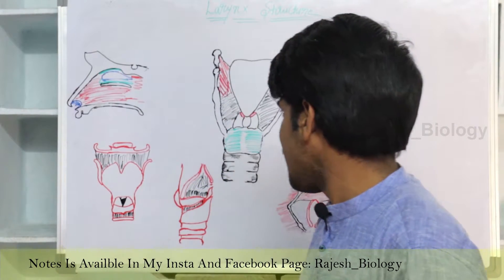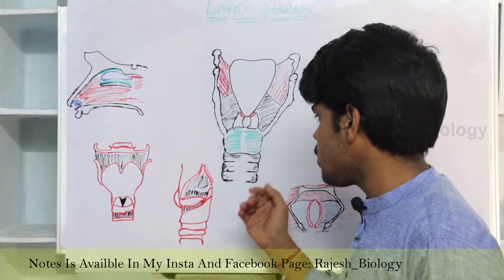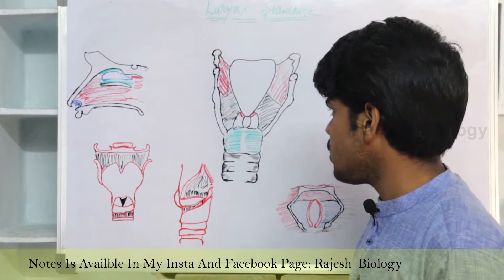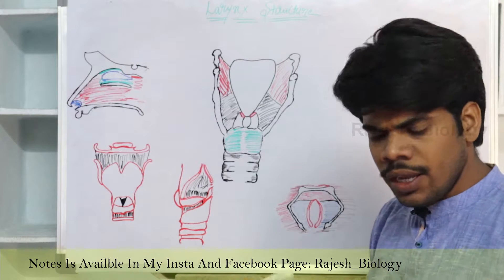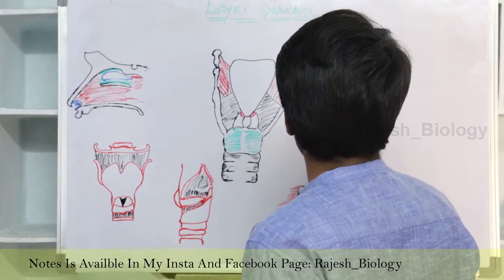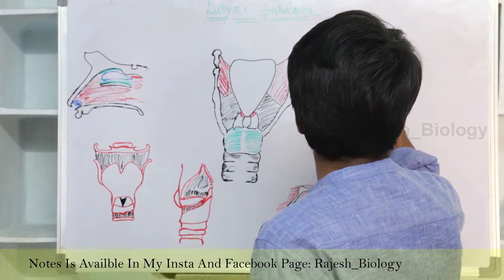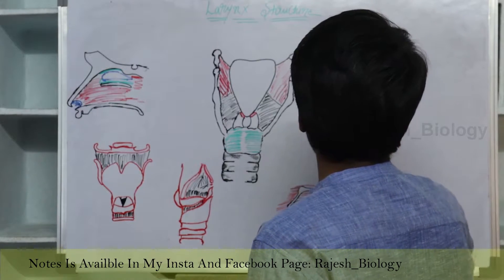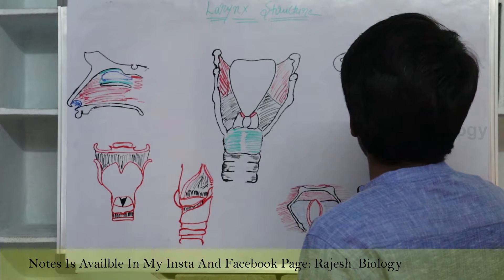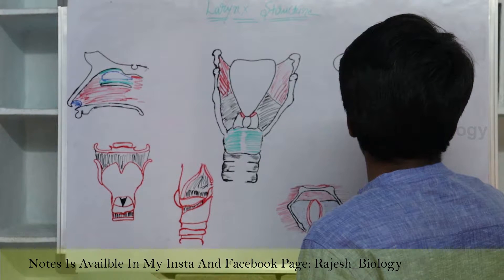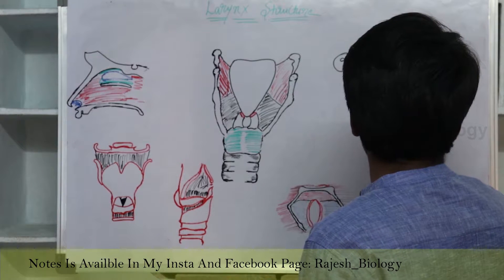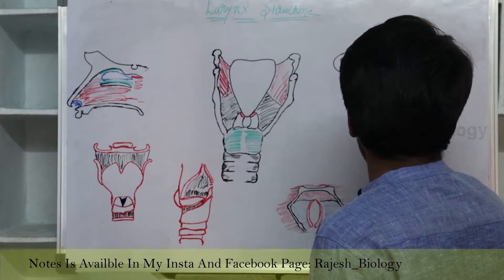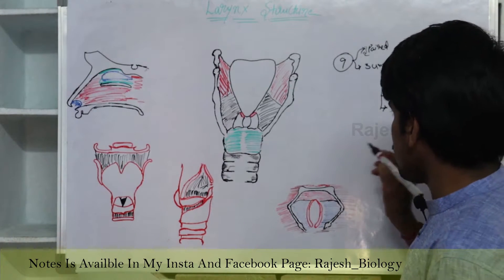Now, structure of larynx — larynx anatomy. This is the ventral view of larynx, dorsal view, and side view. We have completed the remaining organs present in the respiratory system. Coming to the larynx: the larynx is supported by nine cartilages — three are paired cartilages and three are unpaired cartilages. The three unpaired cartilages are epiglottis, thyroid, and cricoid.